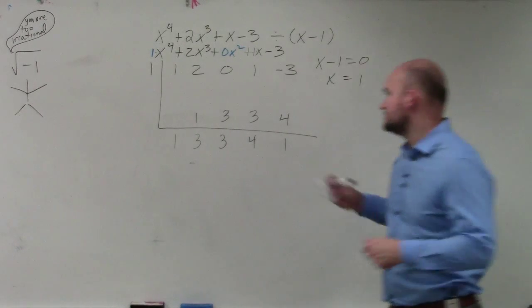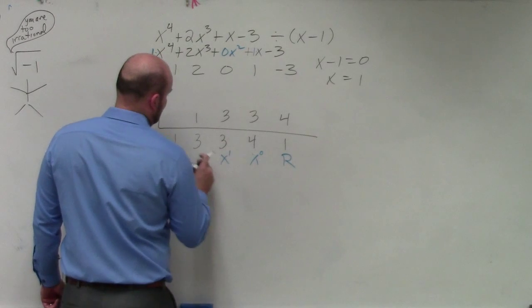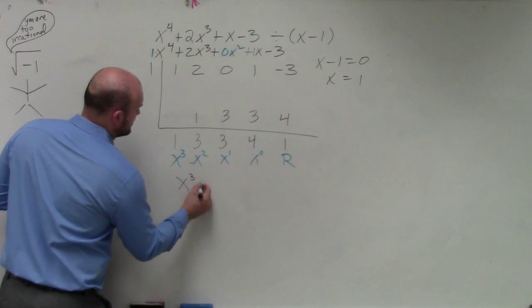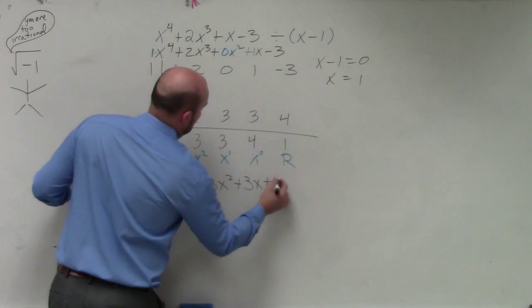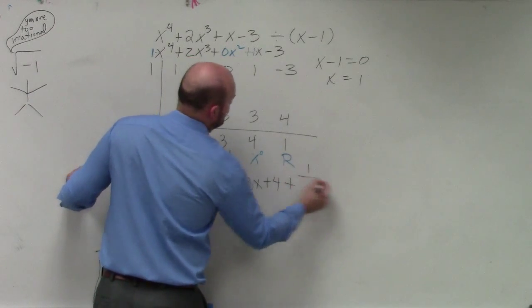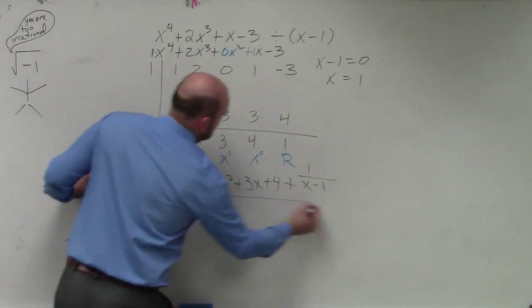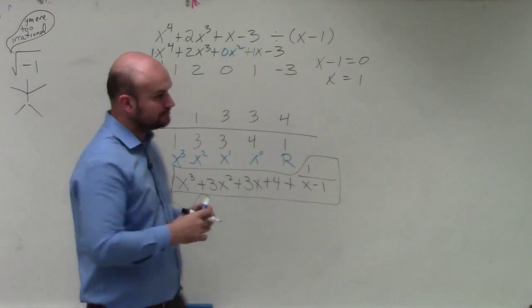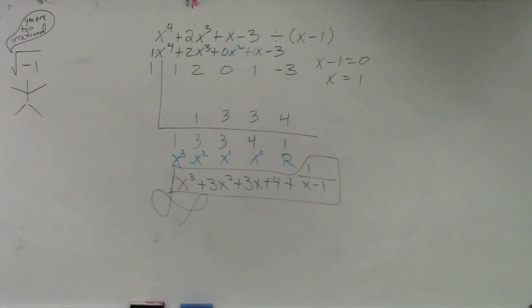Right? So I have a remainder of 1, constant, linear, quadratic, cubic. So my final answer is x cubed plus 3x squared plus 3x plus 4 plus my remainder over my divisor. Yes, no, maybe so.